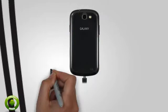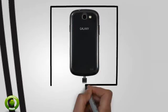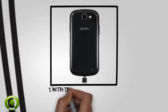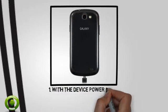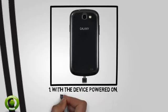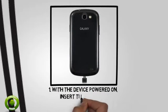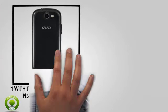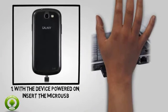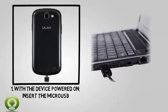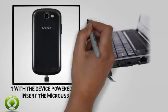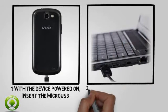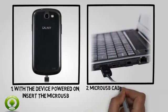1. With the device powered on, insert the micro USB end of the micro USB cable into the port on the right side of the device. 2. Insert the USB end of the micro USB cable into an open port on the PC.